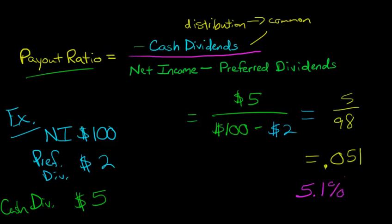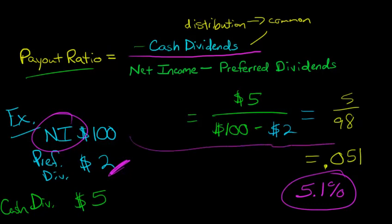So how can we think about this 5.1 percent? What does that number mean? Well, that means that the firm had a certain amount of earnings and it paid out 5.1 percent of those earnings to the common shareholders. Now we adjusted for that $2 because that wasn't really available to be given to the common shareholders. That was set aside for the preferred shareholders. So there was ultimately $98 available to be given to the common shareholders, and of that, 5.1 percent was distributed back to the shareholders in the form of a dividend.